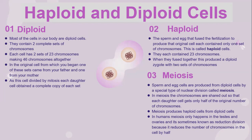And then we have meiosis. Meiosis is the process by which sperm and egg cells are produced from diploid cells by a special type of nuclear division called meiosis. In meiosis, the chromosomes are shared out so that each daughter cell gets only half of the original number of chromosomes. Meiosis produces haploid cells from diploid cells. In humans, meiosis only happens in the testes and ovaries. It is sometimes known as a reduction division because it reduces the number of chromosomes in the cells by half.